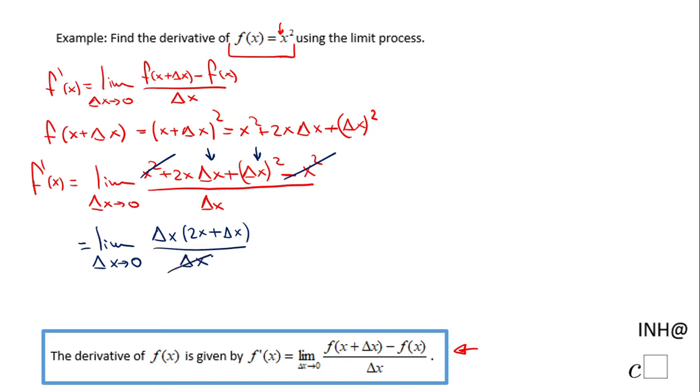and Δx cancels out, and this limit becomes limit when Δx approaches zero of 2x + Δx, and when Δx approaches zero, this limit stands only with 2x,